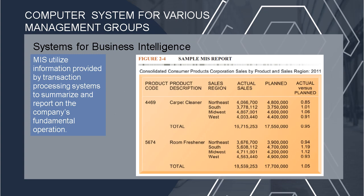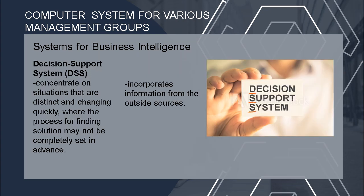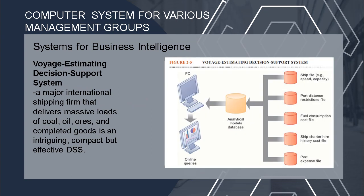Instead of complex mathematical models or statistical methodologies, the majority of MIS employ straightforward processes like summaries and comparisons. The decision support system, or DSS, concentrates on situations that are distinct and changing quickly where the process of finding a solution may not be completely set in advance. It also incorporates information from outside sources. An example of DSS is the Voyage Estimating Decision Support System — a major international shipping firm that delivers massive loads of coal, oil, ores, and finished goods uses this compact but effective DSS, which operates on a powerful PC and is used daily by managers who must develop bids on shipping contracts.